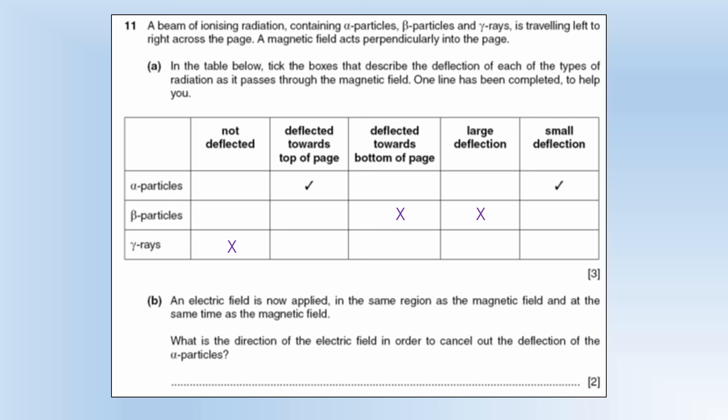The electric field is now applied in the same region as the magnetic field and at the same time as the magnetic field. What is the direction of the electric field in order to cancel out the deflection of the alpha particles? Well, it's got to be perpendicular to the magnetic field. And actually the positive needs to be at the top of the page. So then that reverses the effect of the magnetic field.